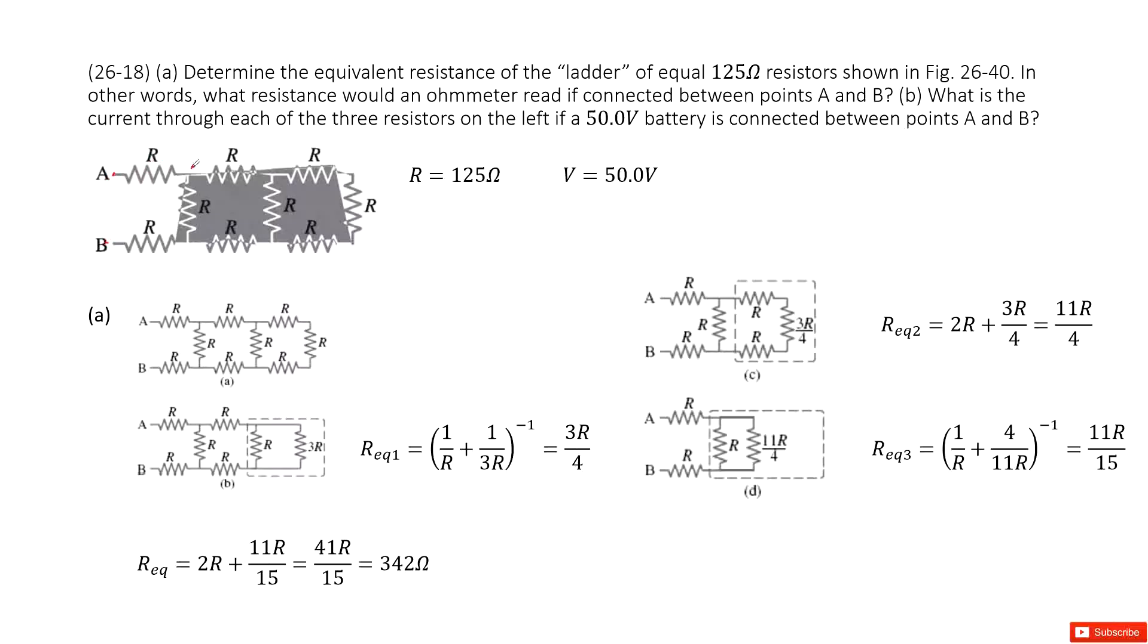For each resistor, resistance equals 125 ohms. How can we do that? First of all, we can draw this picture.